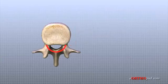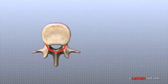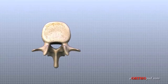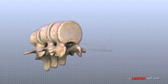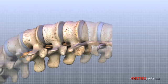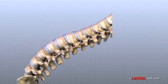A bony ring attaches to the back of each vertebral body. When the vertebrae are stacked on top of one another, these rings form a hollow tube called the spinal canal. This bony tube surrounds the spinal cord as it passes through the spine.